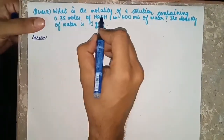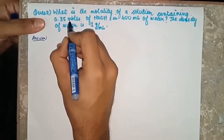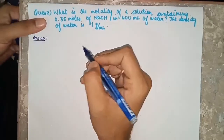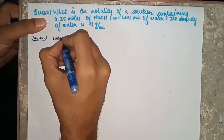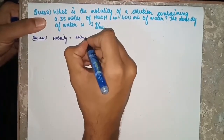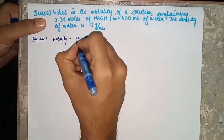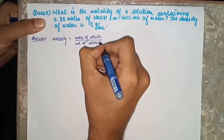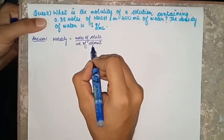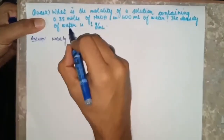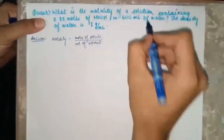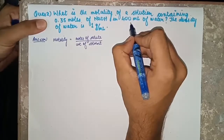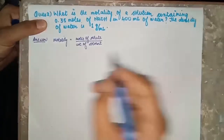The second question is: what is the molality of a solution containing 0.35 moles of NaOH in 400 ml of water? The density of water is 1 gram per ml. We know that molality is equivalent to moles of solute divided by weight of solvent. Here the solvent is water and the solute is NaOH.